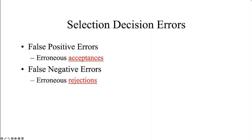A second issue is that of false negative errors — erroneous rejections of job applicants. A false negative means that an individual should have been hired but is not. The applicant fails to pass through the selection process but in fact would have been successful on the job. These errors are more difficult to detect, but it is important to minimize them because the organization wants to hire the best possible employees instead of passing on them while other organizations benefit.